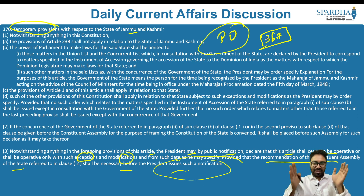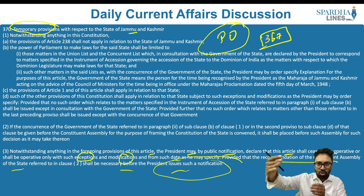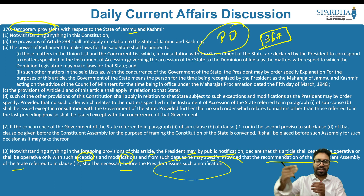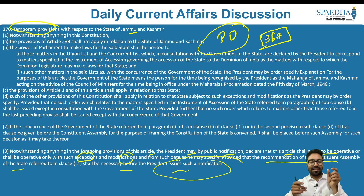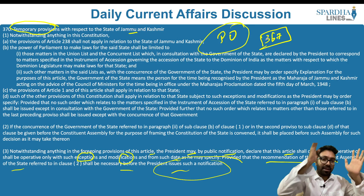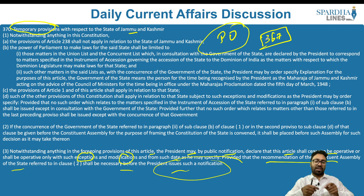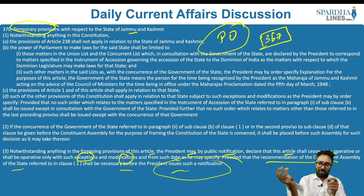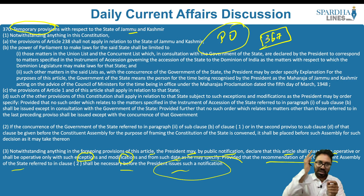With this, the creation of Jammu and Kashmir as a union territory took place, a separate union territory of Ladakh was created, Article 370's temporary provision was completely eliminated, and the entire constitution of India became applicable to the state of Jammu and Kashmir.